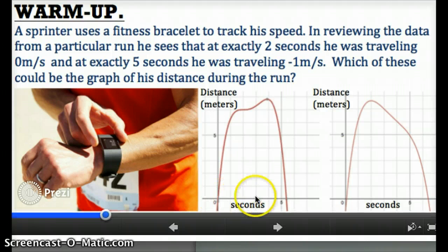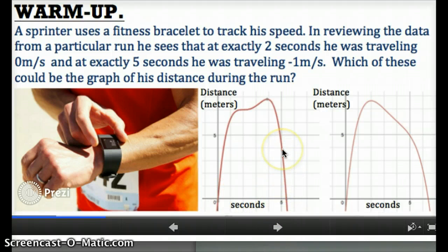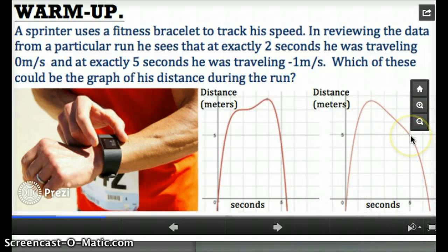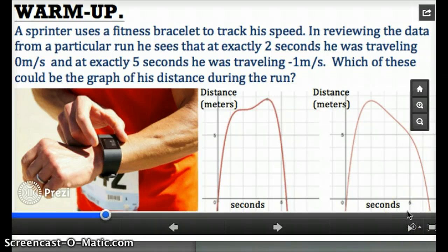So on this first position graph, when I go to five seconds and I look up at the actual function, it definitely has a negative slope, but the slope here looks like it's a lot steeper than negative one. It looks like it's maybe negative six or negative seven. The second graph, when you go to five seconds and you look at the slope of that point, that's more reasonably negative one meters per second. And that's why the second graph was the better choice.